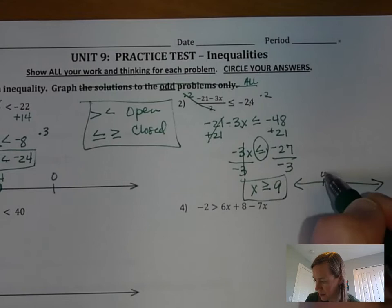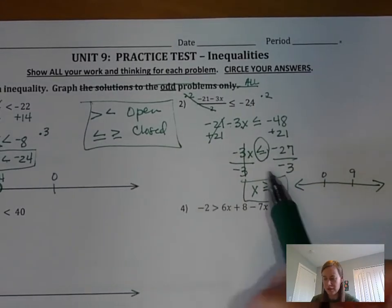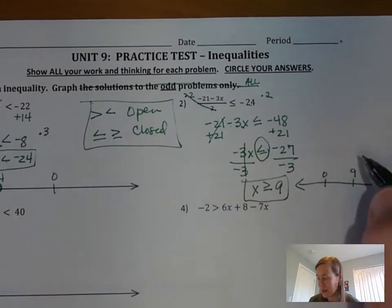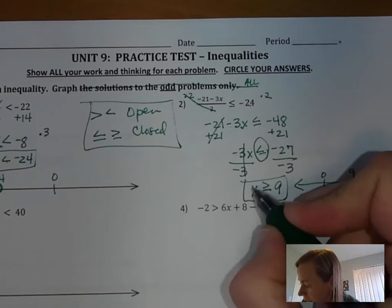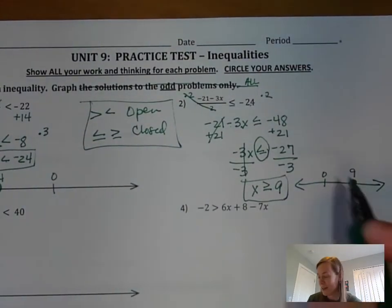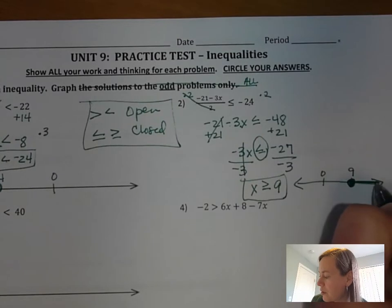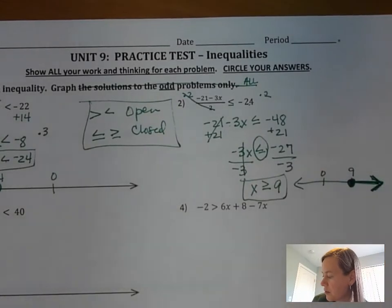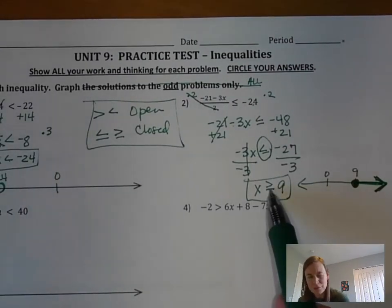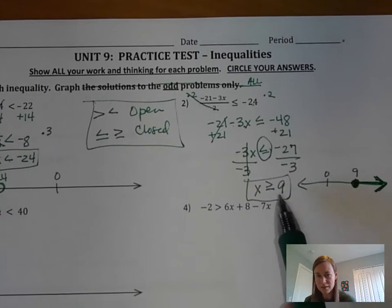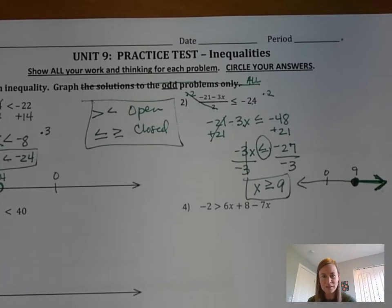Now we graph it. Put 0 and 9 on a number line. The sign has 'or equal to,' so we need a closed dot at 9 — that shows 9 is one of the answers since 9 is greater than or equal to 9. The answers are greater than or equal to 9, so the arrow goes right. On the quiz, choose that sign, fill in 9, choose closed dot, and choose arrow pointing right.